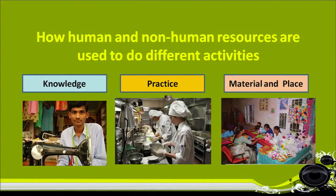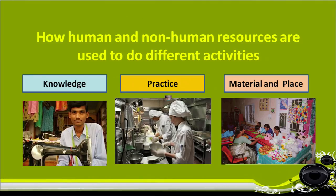Let us understand human and non-human resources — how they are related and how they are used to do activities. You can see some pictures. This young boy in the first picture has knowledge of tailoring, which is a human resource, and also has a sewing machine, which is a non-human resource. In another picture, two young girls are practicing to become chefs — the kitchen is a non-human resource and practice is a human resource. In the third picture, a teacher is training girls in the skills of making toys for sale — skill is the human resource and the material for toy-making and the place where they sit is the non-human resource.